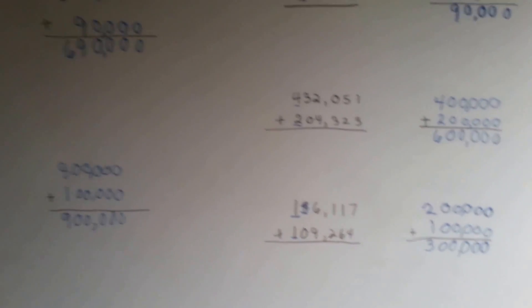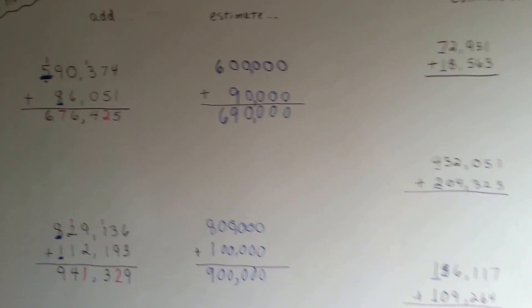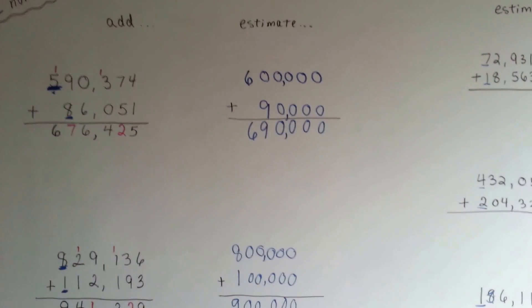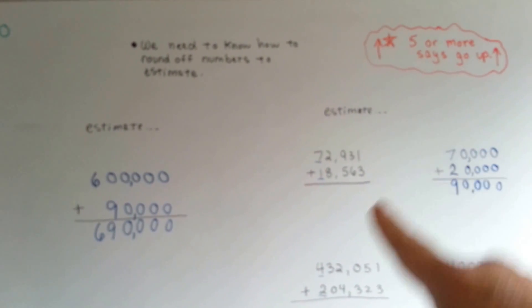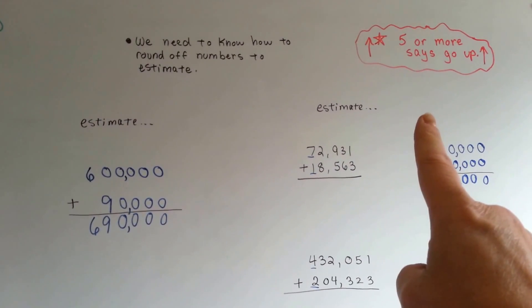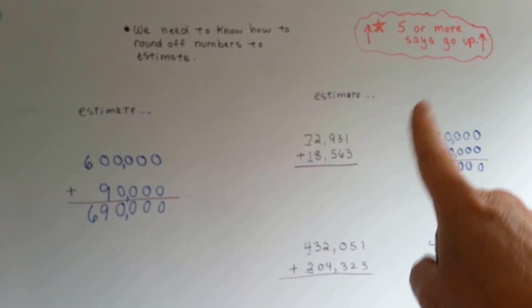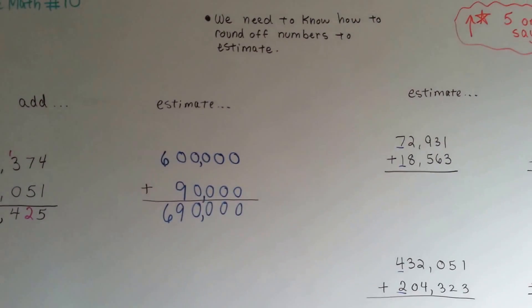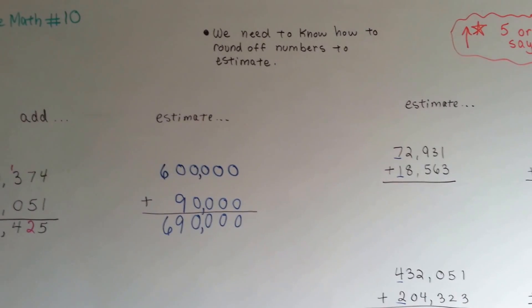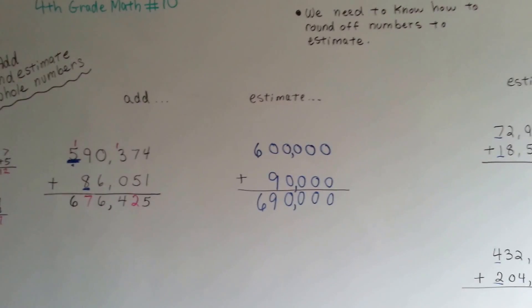So that's how you estimate, and that's how you add and regroup. Just make sure you keep your columns straight so that when you regroup, you put it in the correct column. Make sure that you remember the red rule: if the number to the right of the place value you're rounding is a 5 or more, it tells that place value to go up to the next number. If it's less than 5 — a 0, 1, 2, 3, or 4 — it tells the number to stay the same. Keep up the good work. I'll see you next video.